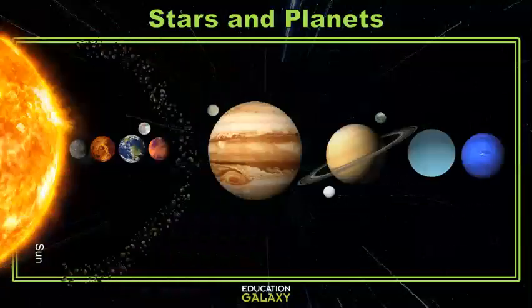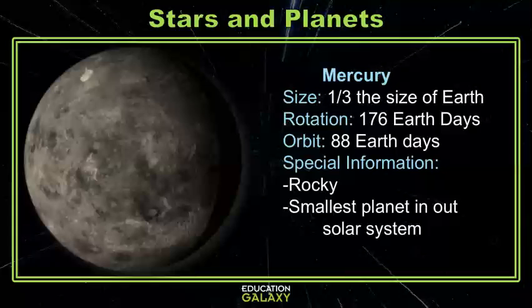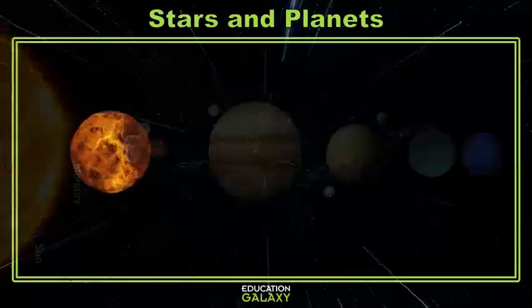The first planet in our solar system is Mercury. Mercury is the smallest planet. It has a rocky exterior and is only about one-third the size of Earth. It's the closest planet to the sun.